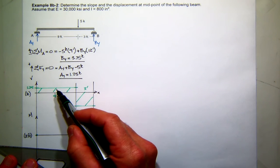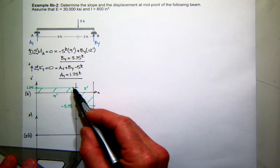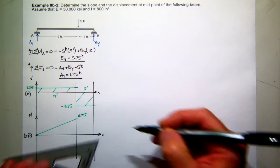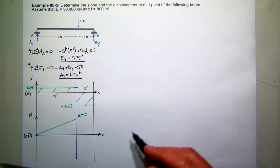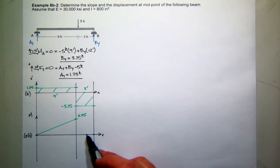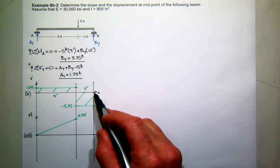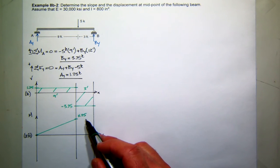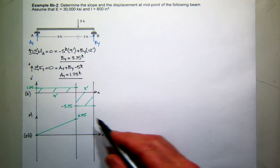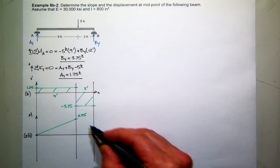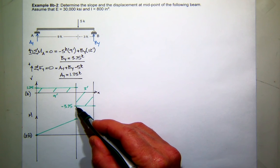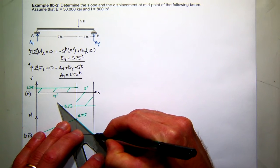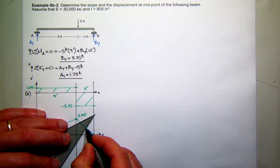The slope of my moment diagram is given by the shear, and you see the shear is constant and positive, so here's a constant positive slope. The change in moment over the last three feet is the area under the shear diagram, which is rectangular. So 3.75 times 3, that's negative 11.25, brings me to 0. And the shape is given by the value of the shear, which is constant and negative, so there's a constant negative slope. So there's my moment diagram.